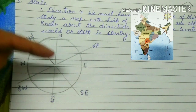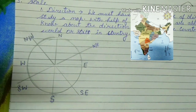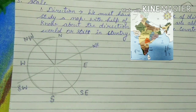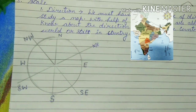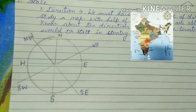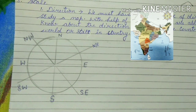In the same manner, for the states of India — if we study India's map, the states at the top are northern states. As you can see in the map, Jammu and Kashmir is at the top, so it is a northern state. The states at the bottom, like Kanyakumari, are southern states. On the west side, Gujarat is a western state, and Assam is an eastern state. We can find this out with the help of direction.